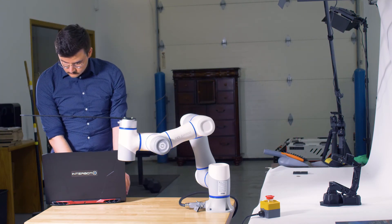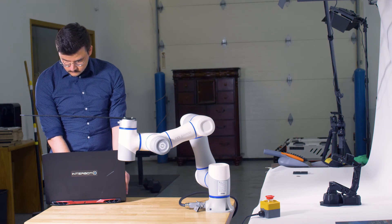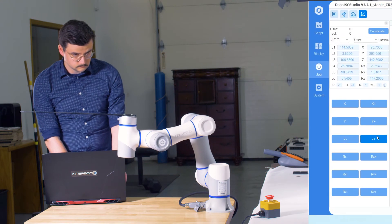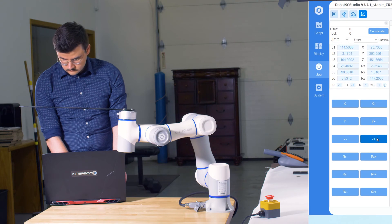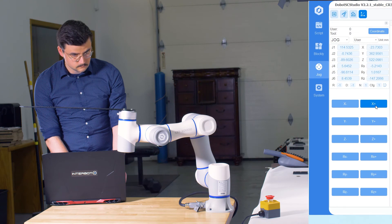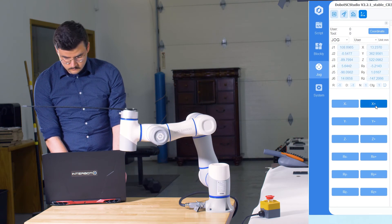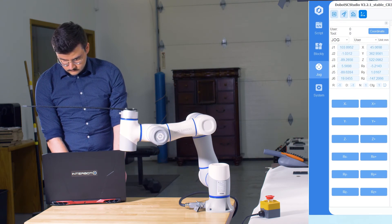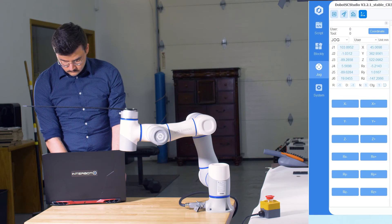The first captured pose will serve as a reference point for the rest of the captured poses. Jog or drag the robot in the tool coordinate system's C direction and capture the second pose. Jog or drag the robot in the tool coordinate system's X direction and capture the third pose. The Y direction is calculated via the right-hand rule.